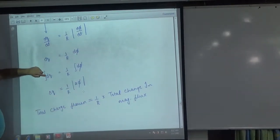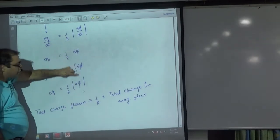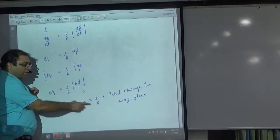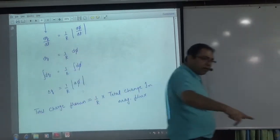Integrate. Integrate, what will happen? Delta Q. What will happen? Delta Phi. So how much total charge will happen in a wire? 1 by R times total change in magnetic flux.